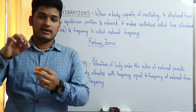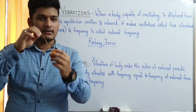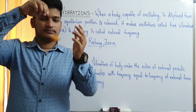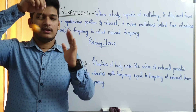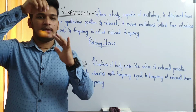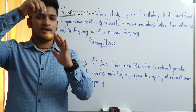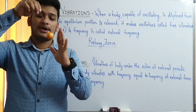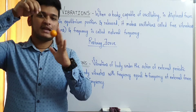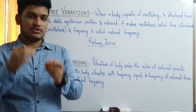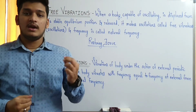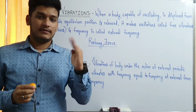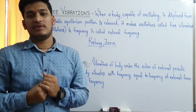Consider the same pendulum — we displace it and release it, but during the oscillations, whenever the pendulum reaches its extreme position, we give it a slight push. We continuously apply a force whenever the pendulum reaches one of its extreme positions. This force acts like an external periodic force, and such oscillations are called forced vibrations. Here the body vibrates with the frequency equal to the frequency of the external periodic force.